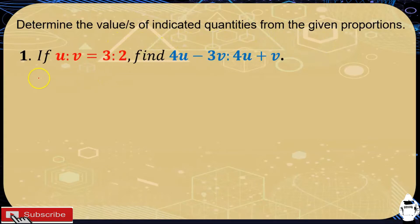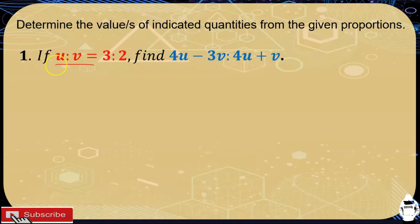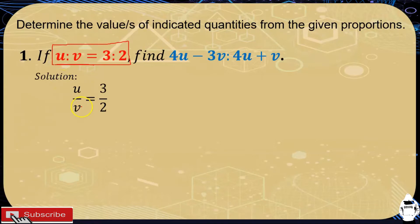For the first one: if u is to v as 3 is to 2, find 4u minus 3v is to 4u plus v. What we'll do first is write this in fraction form, so it becomes u over v is equal to 3 over 2. We discussed last time how to write proportions in different ways — fraction form and colon form — so here we convert from colon form to fraction form.